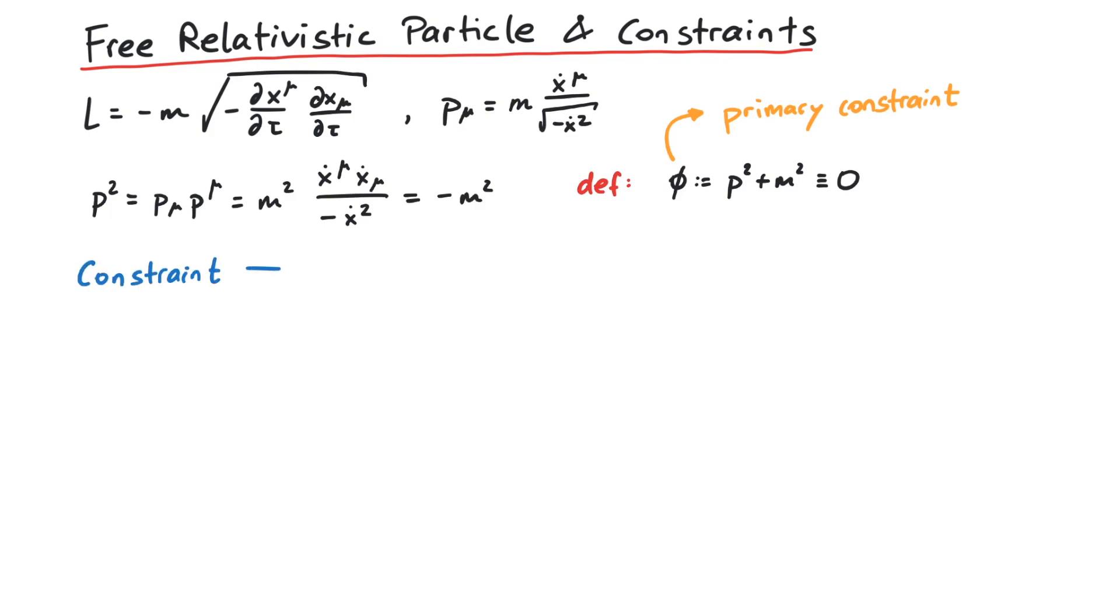A constraint like this appears when we have a system where we cannot express the velocities x dot uniquely in terms of the momenta p.